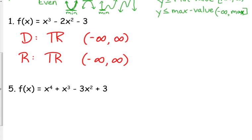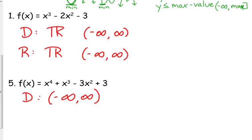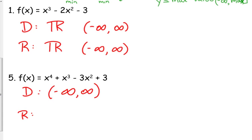Now, something like number five, look at number five here on this paper. f of x is equal to x to the fourth plus x cubed minus 3x squared plus 3. It's a polynomial, so its domain is all real numbers. You can go ahead and put that down. But the question is, what's going on with the range? It's positive x to the fourth, so it's going to face upward. It has a minimum value, but we're going to have to figure out what that minimum value is.